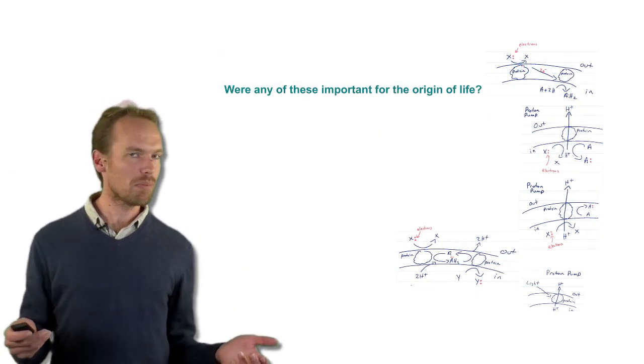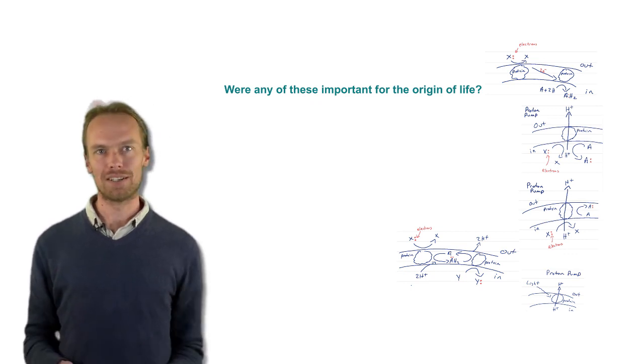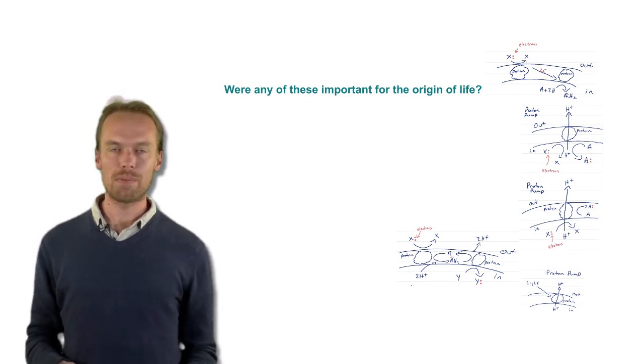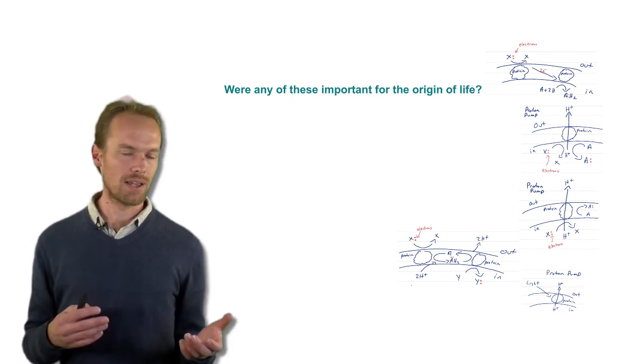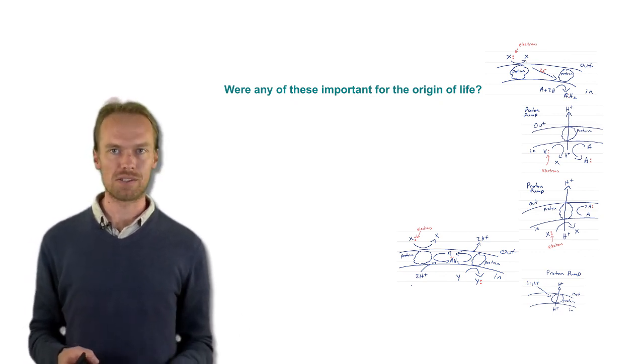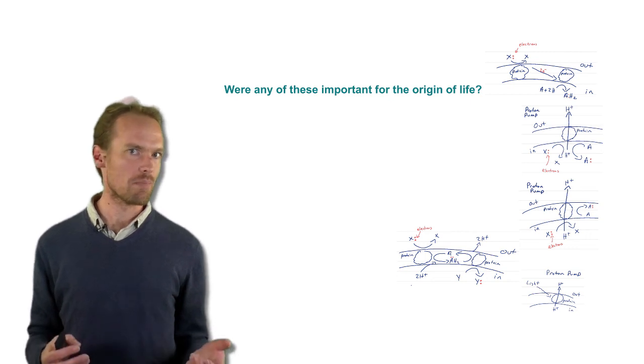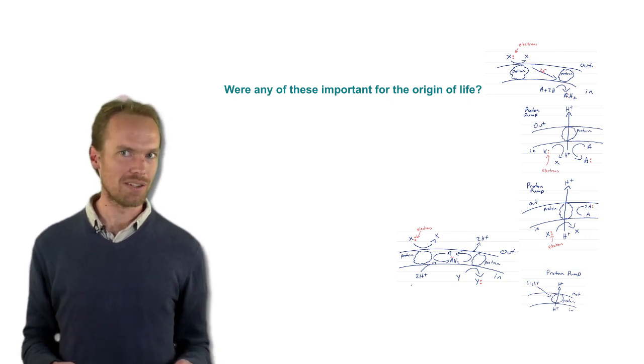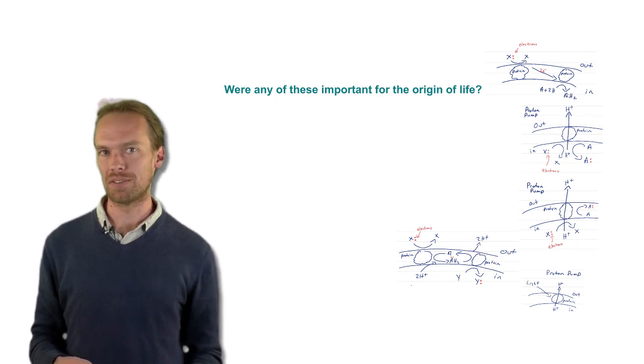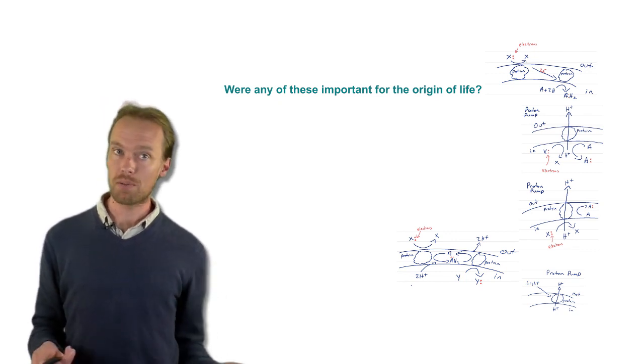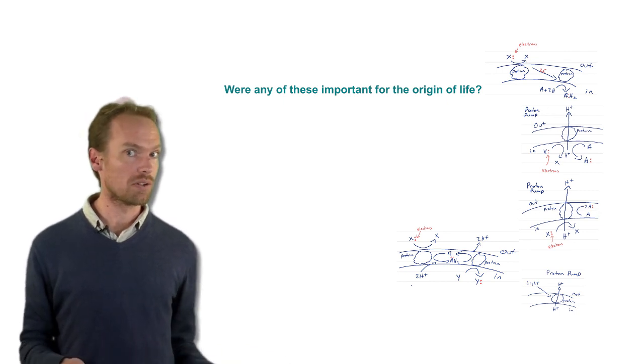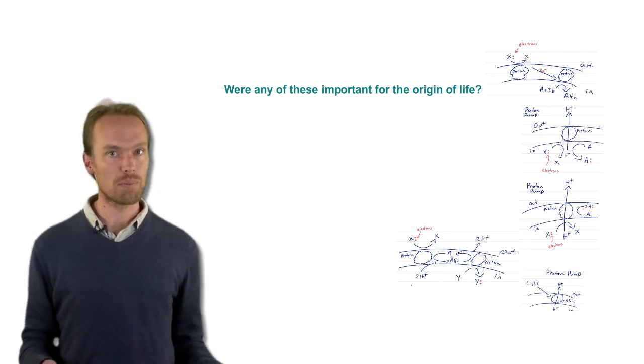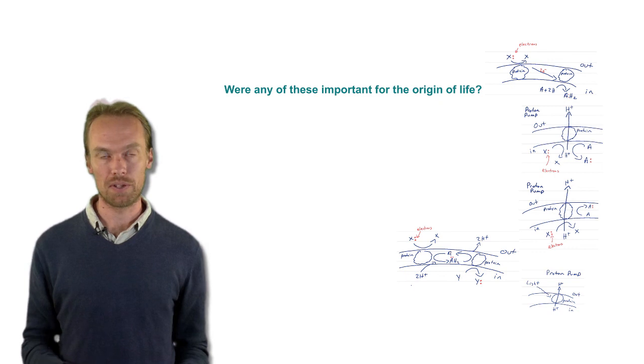Were any of these complexes important for the origin of life? It's a great question, and nobody really knows so far. Some of them seem rather complicated. What I've drawn is clouds today that are involved in these proton pumping reactions are actually very complicated multimeric protein machines. They're very complicated. They're difficult to understand even for us doing research on them today. Maybe they were too complicated for the origin of life, or maybe the origin of life required the formation of these complex machines. Which type would have been involved in the formation of life? It's an open question.